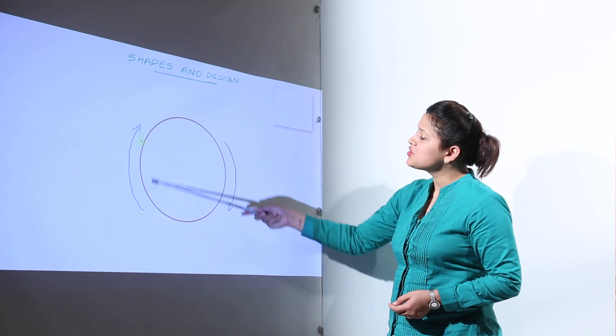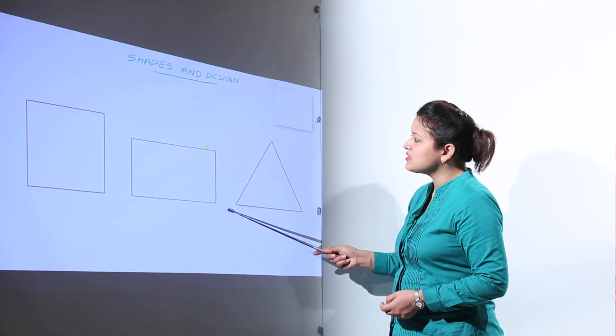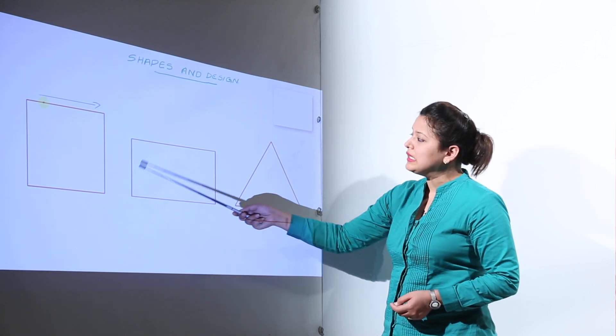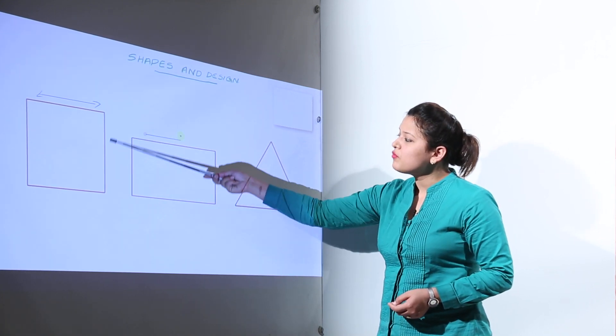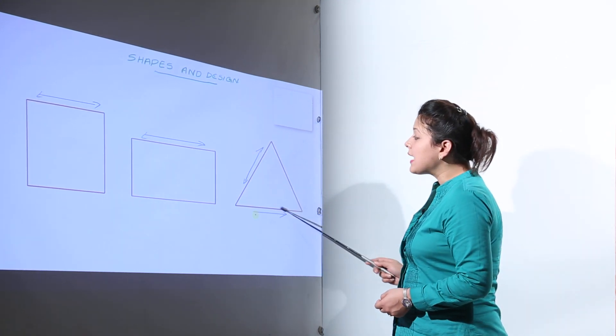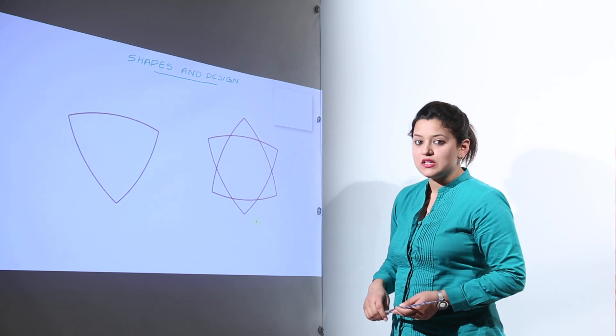Now you can see this shape. This has curved edges. Now these shapes have straight edges only. Now this square is made up of only straight edges. This rectangle is made up of only straight edges and this triangle is made up of only straight edges.